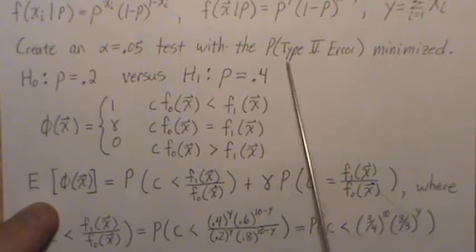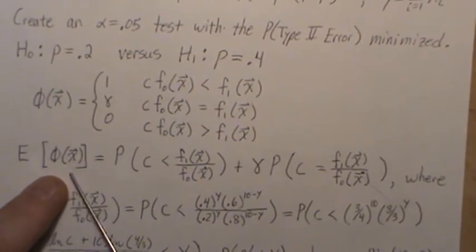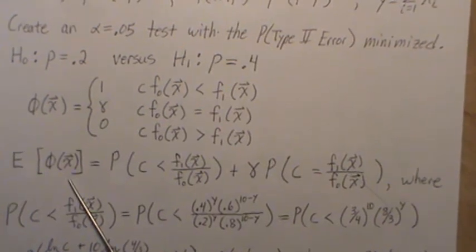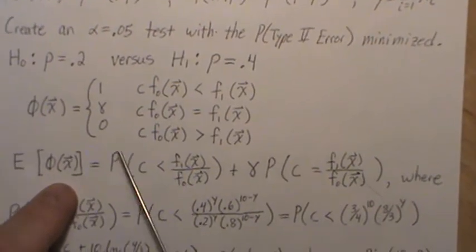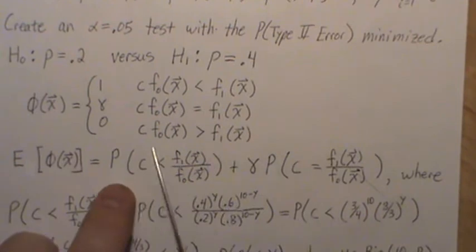So the expected value of our test function, that's how we get at the size of the test. So it's 1 times the probability of this happening, which is this piece here.